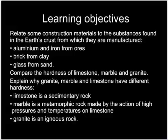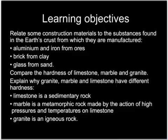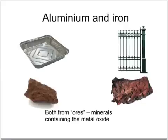You need to know where some of these construction materials derive from, and you also need to know about the hardness of three particular rocks and why they have this order of hardness. Aluminium and iron are both metals which are commonly used in construction. However, neither of these are found as the metal in the ground. Instead they are found in the form of ores — rocks containing compounds of these metals — and the metals must be extracted from them before they can be used.